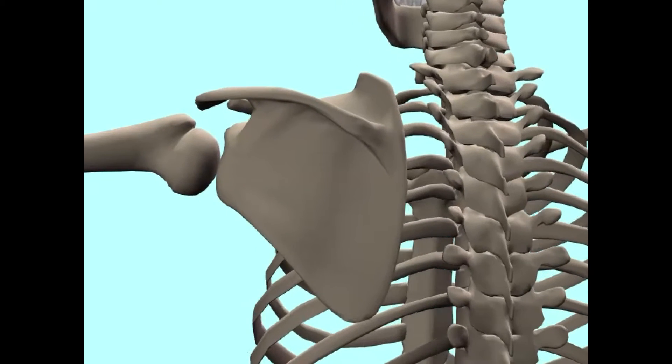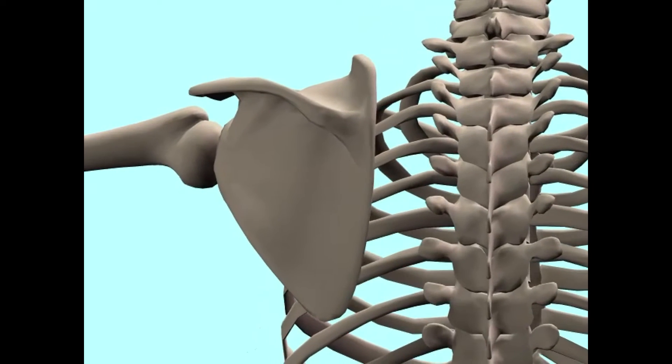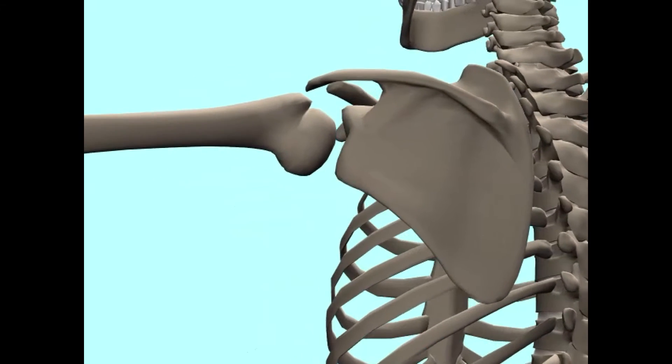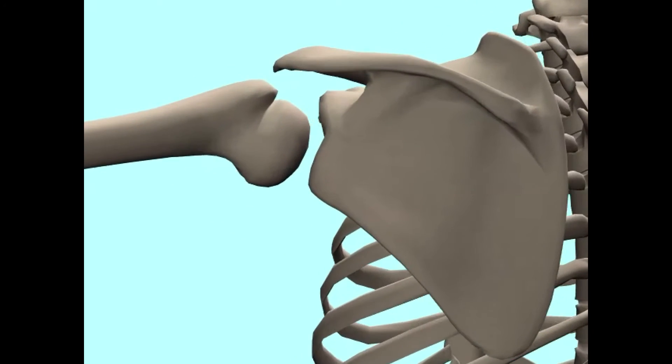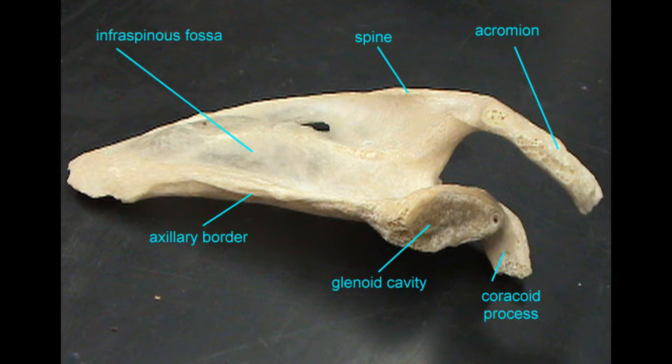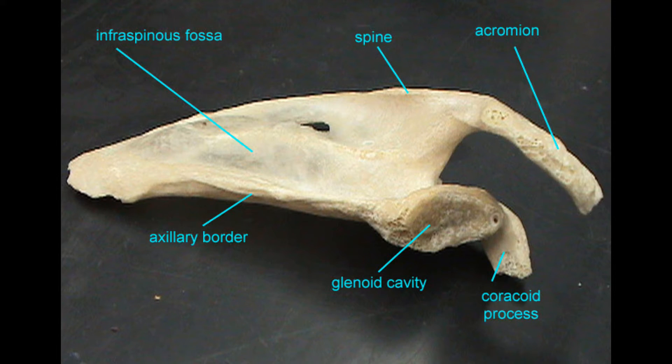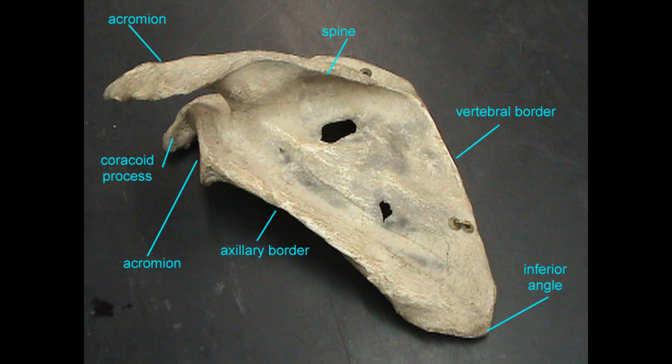The three borders of this triangular bone are termed the medial or vertebral border, the lateral or axillary border, and the superior border.